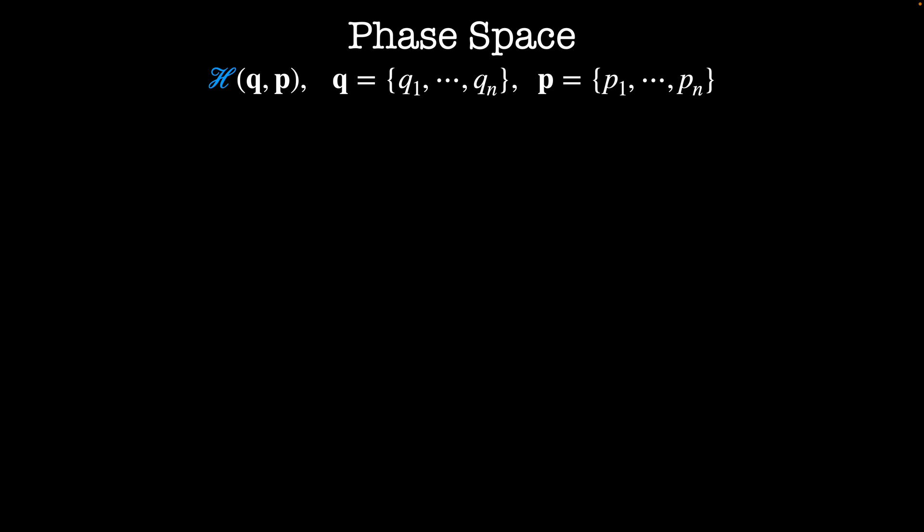This could be a system with n generalized positions or a system with one generalized coordinate in n dimensions. And the corresponding generalized momenta range from P1 through Pn. The space defined by all the generalized positions and all the generalized momenta is called phase space.